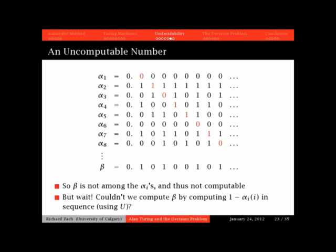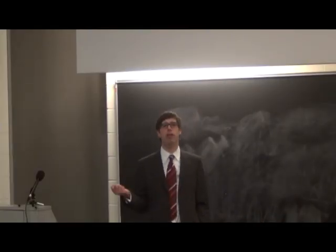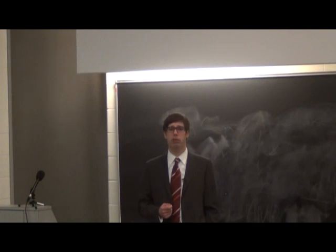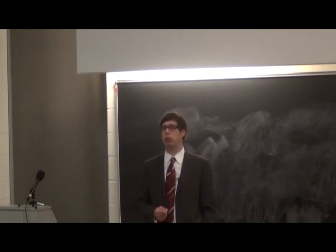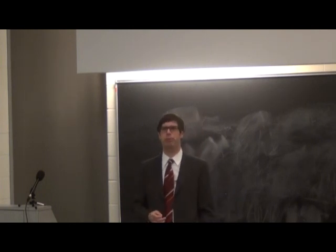So I've defined a real number between zero and one by giving you a binary expansion of that number. And that number doesn't show up on the list. Why? Because in the first digit it's different from alpha_1, so it can't be alpha_1. In the second digit it's different from alpha_2, so it can't be alpha_2. In the third digit it's different from alpha_3, so it can't be alpha_3, and so on. So it's none of these — but those were all the computable numbers. So that means that beta can't be a computable number. So we've constructed a number beta which isn't computable.